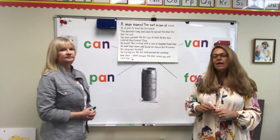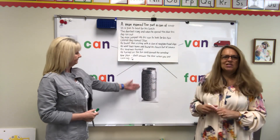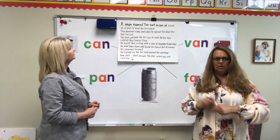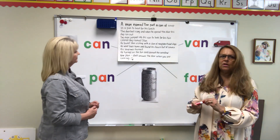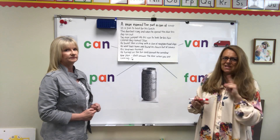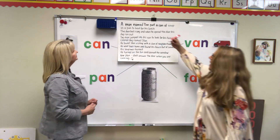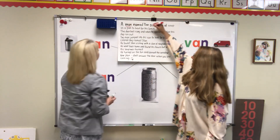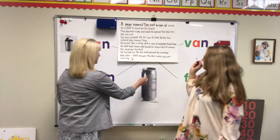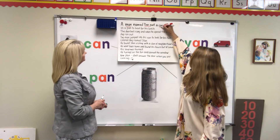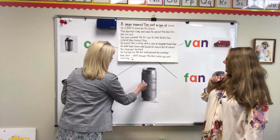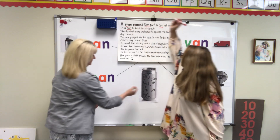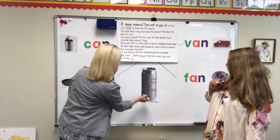Now we're going to go through the story. Miss Trish is going to cross these words off if we use them, and I'm going to underline them if we use them. So listen for the AN word as we go through the sentences again. A man named Dan — cross off Dan. Put a can — cross off can. Of soup in a pan. Pan — where's pan? Pan.